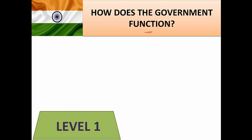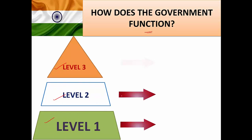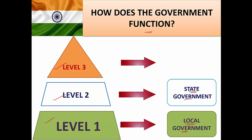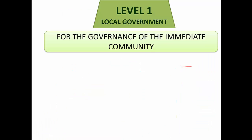The government functions at three levels. At level one we have the local government, at level two we have the state government, and at the topmost level we have the central government. The local government is for the governance of the immediate community.